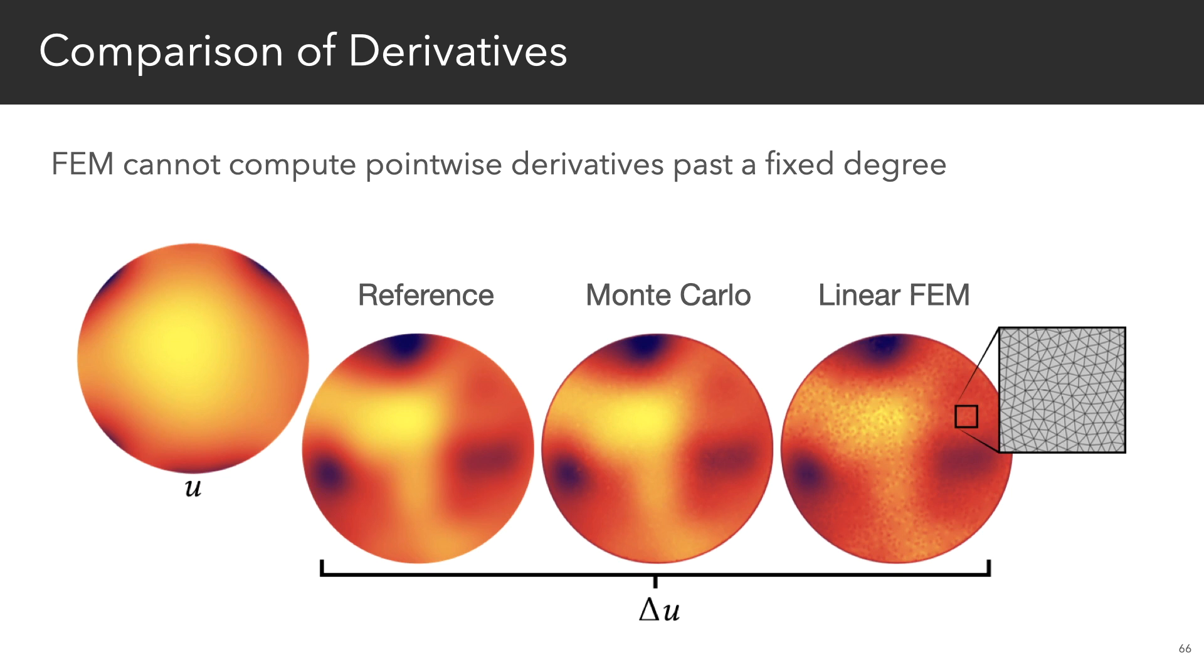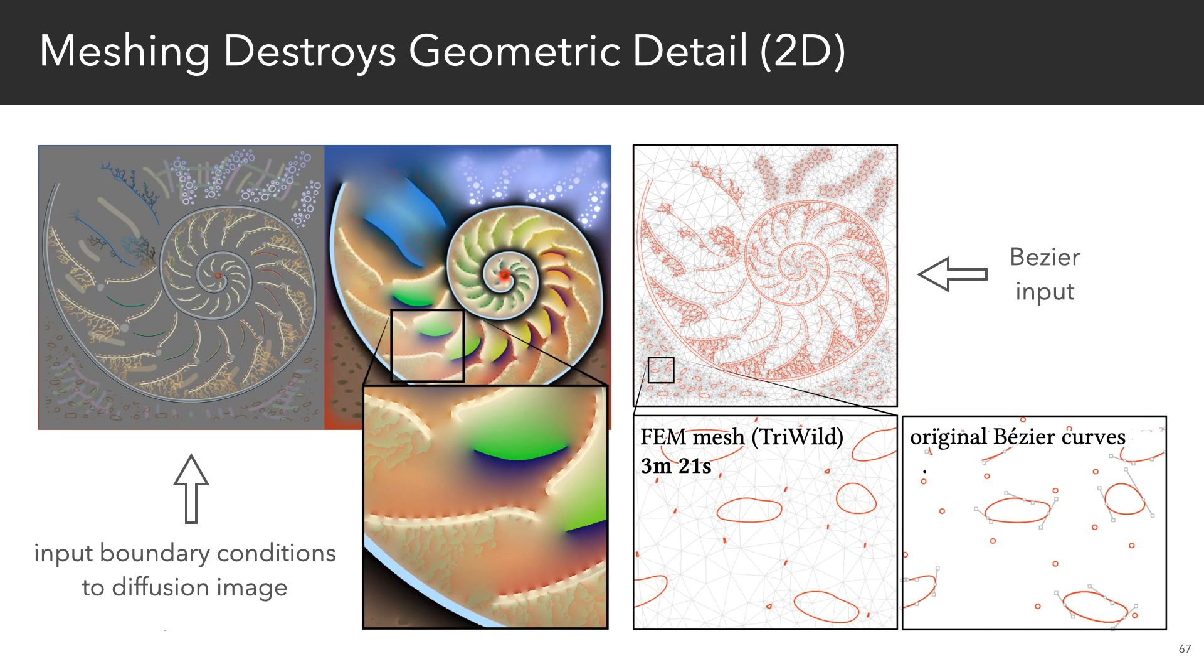There are also other things you can do with Monte Carlo that aren't so easy with FEM. So for example, we can compute exact pointwise derivatives in expectation, but with FEM, higher-order derivatives are not possible unless you use higher-order basis functions that increase the size of your linear systems.